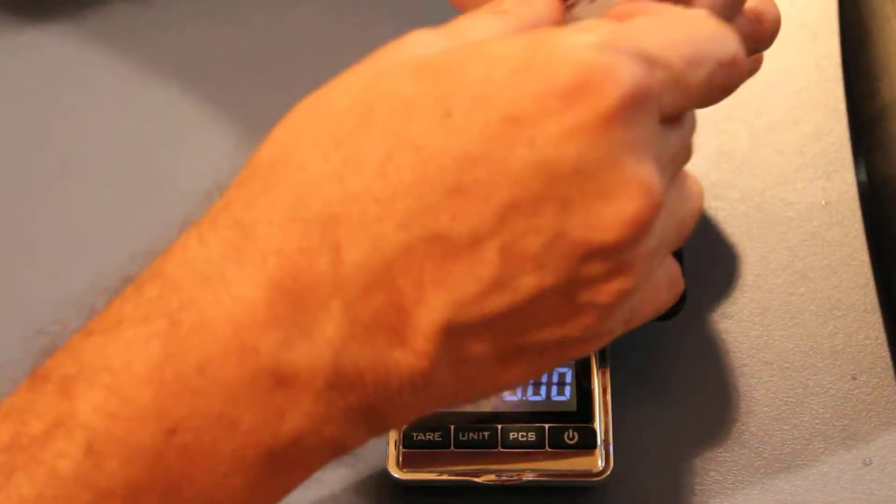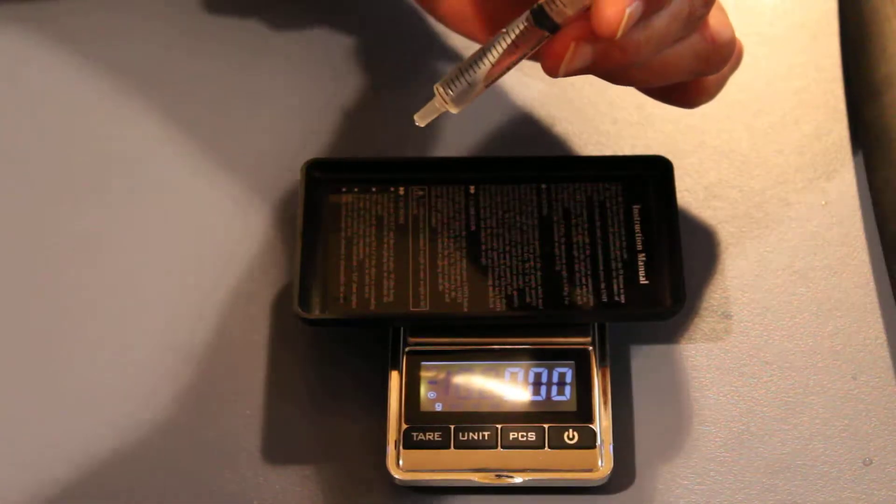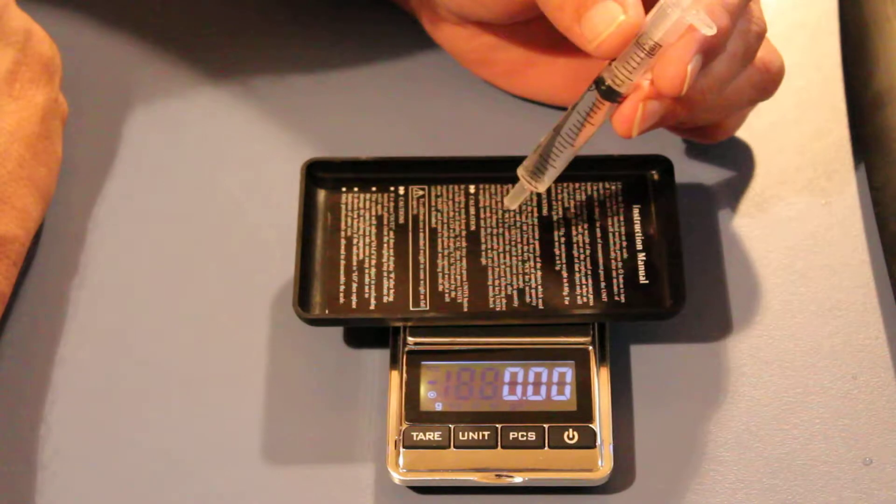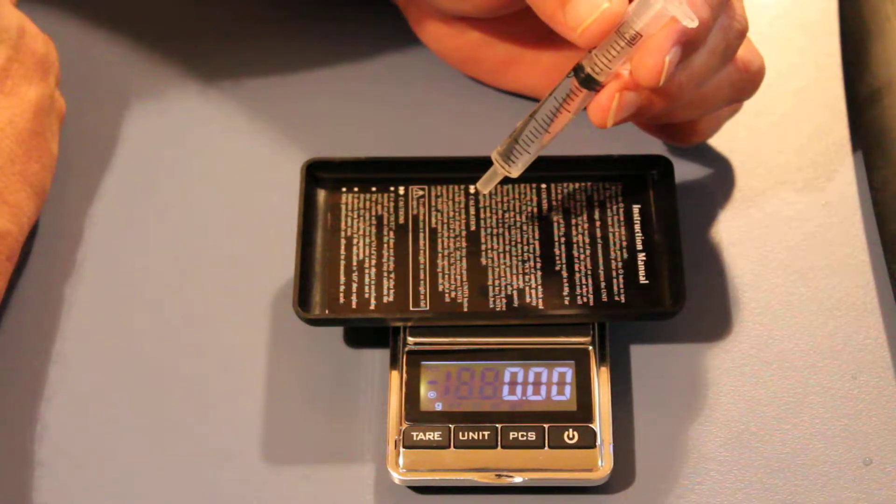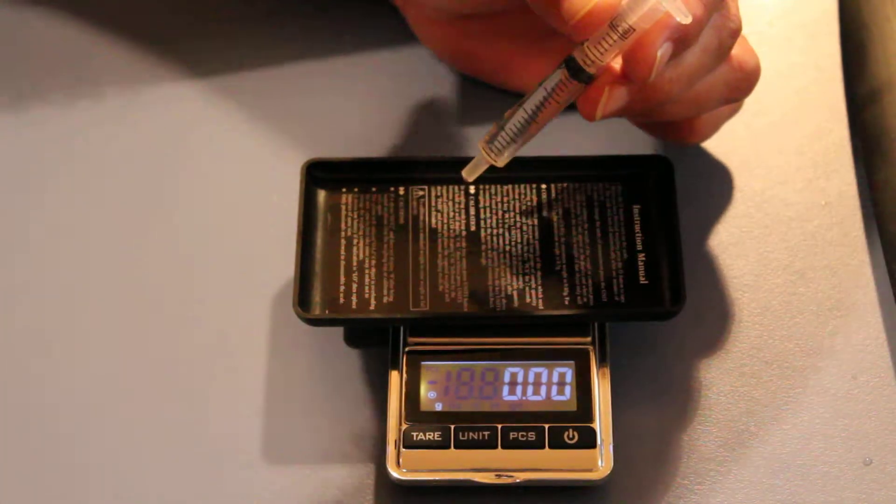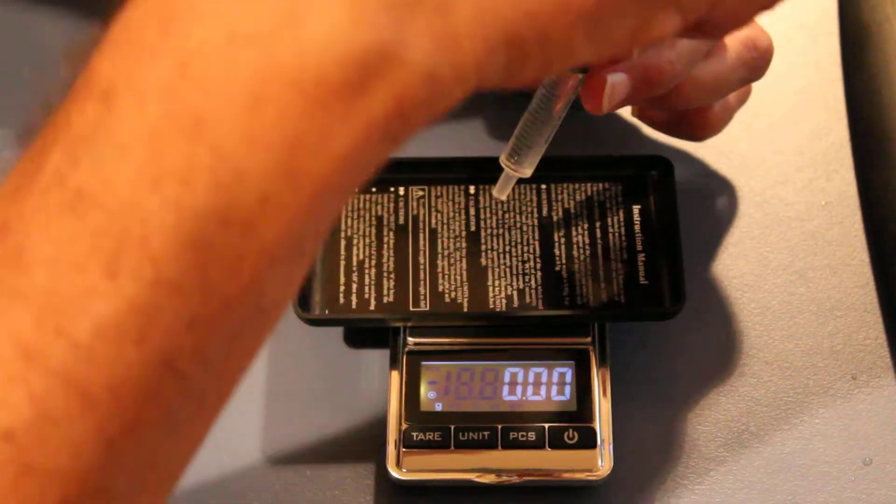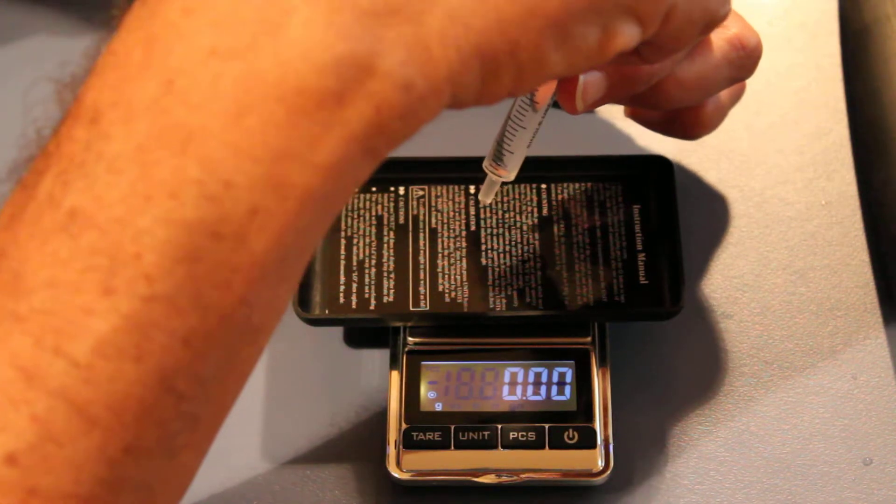Now okay, so one mil of water should be one gram in weight. So I'll just make sure they don't turn off on me. Now these go up to 500 grams too.